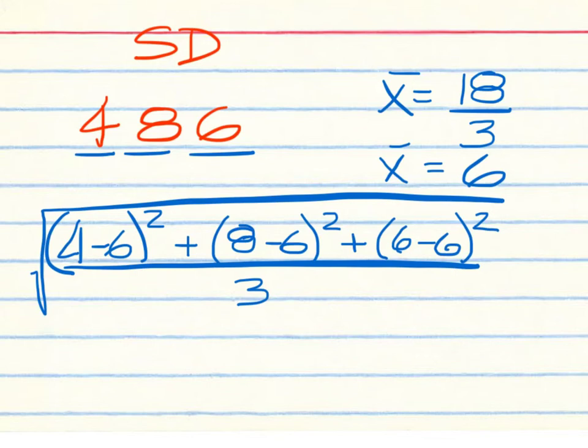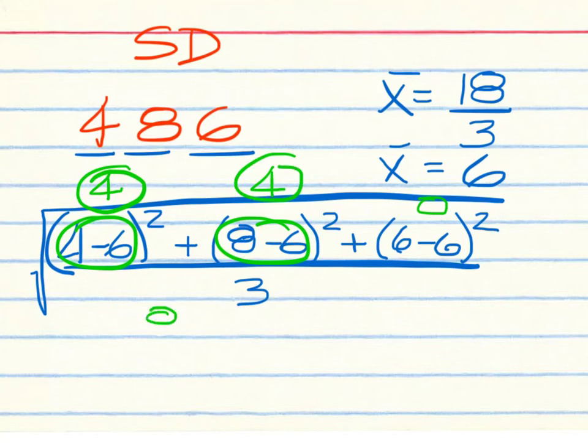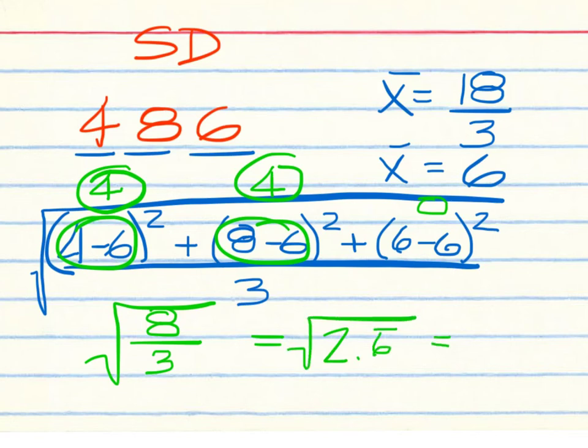Now each one of these in here. You're going to have a negative 2 squared. That's 4. And then 2 squared is 4. 0 squared is 0. So 4 plus 4 is 8. We will have 8 divided by 3. And then need a square root. 8 divided by 3 is 2.6 repeating. And then we need a square root. Which will give us 1.6 rounded to the tenths place.